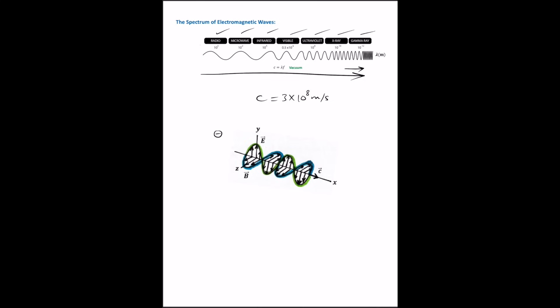When an electric charge accelerates — for example, if this charge is oscillating — it will generate a changing electric field, which will generate a changing magnetic field, which in turn will generate a changing electric field, and so forth as they keep regenerating each other and produce an electromagnetic wave.